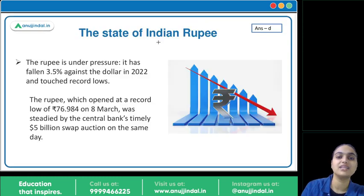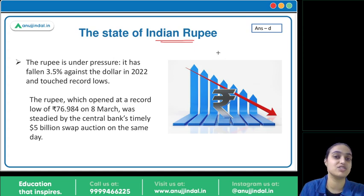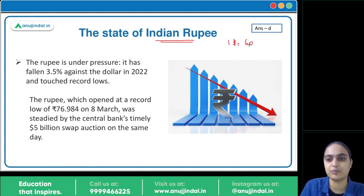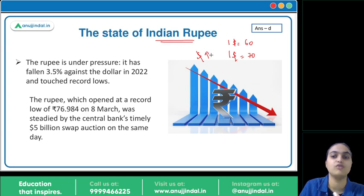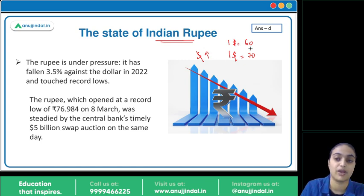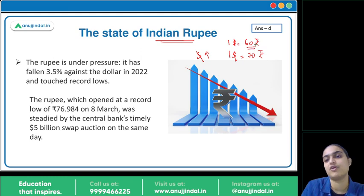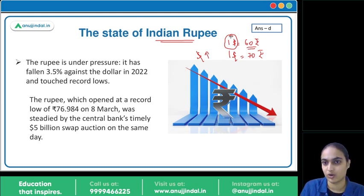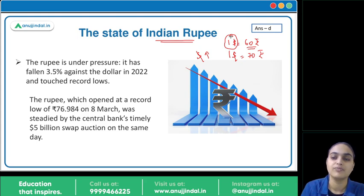Talking about the state of the Indian rupee vis-à-vis the dollar: if one dollar is 60 rupees today and tomorrow one dollar becomes 70 rupees, the value of the dollar has appreciated. Talking about rupee, the value of rupee has depreciated. If someone from India wants to buy goods from the US and pay in dollars, they need 60 rupees per dollar — but if rupee depreciates, they will have to pay 10 more rupees to buy the same goods.